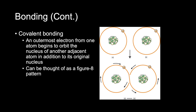Covalent bonding is based on two atoms sharing electrons that then orbit both nuclei. As electron shells fill from the one nearest the nucleus outward, the outermost shells are not always full. In a covalent bond, an outermost electron from one atom begins to orbit the nucleus of an adjacent atom in addition to its original nucleus — creating a figure-eight path as it orbits first one nucleus and then the other. The bonding of various atoms to form molecules permits highly complex matter to exist. This figure shows covalent bonding with the figure-eight orbital path and the shared electron.